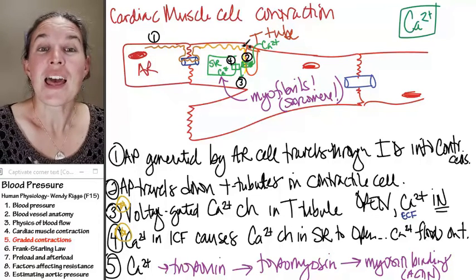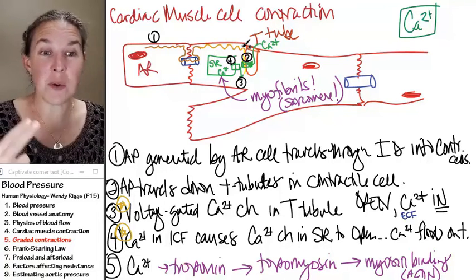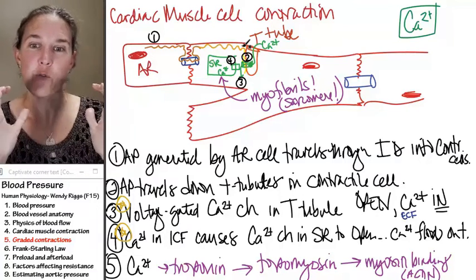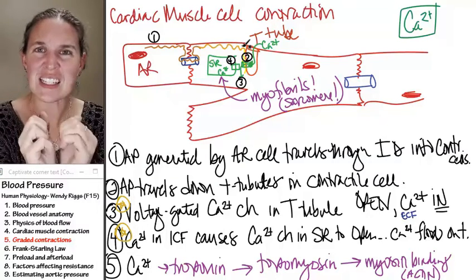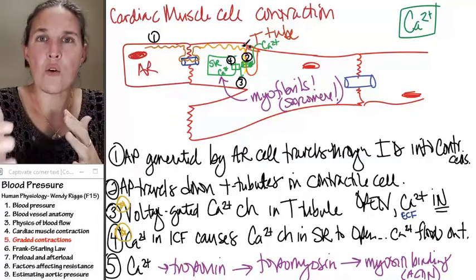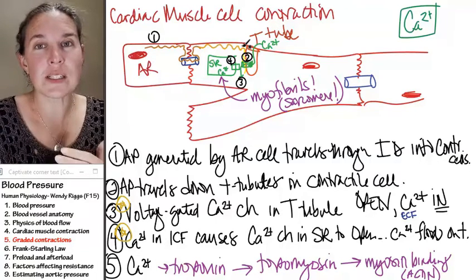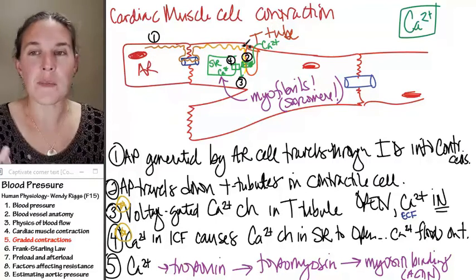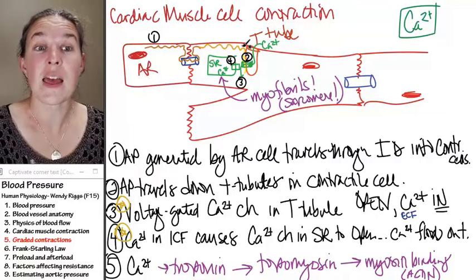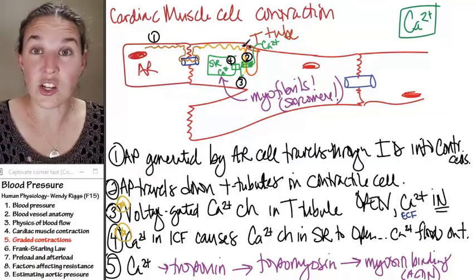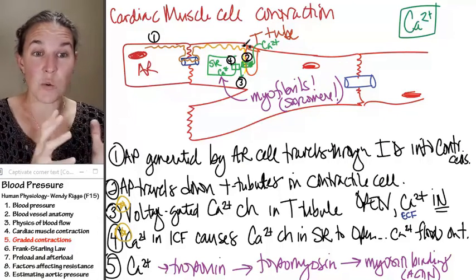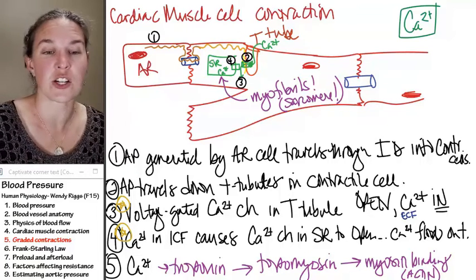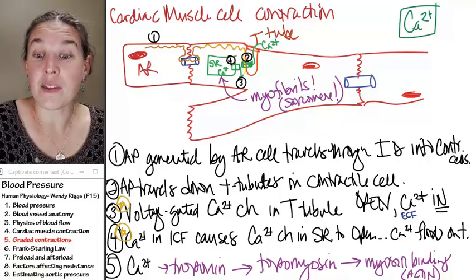There is another way that your heart can generate different sized contractions — more force, more pressure; less force, less pressure. There's another mechanism. One mechanism is to change the amount of calcium in the intracellular fluid — that's one mechanism to change and modify the size of the cardiac muscle contraction. We'll cover the other one next.